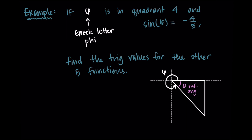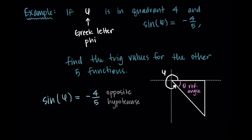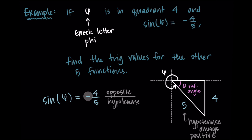I know that sine of phi is negative four over five. Sine is opposite over hypotenuse, so the four is the opposite and the five is the hypotenuse. The hypotenuse is always positive — it's like the radius of the circle — and one of the sides, x or y, can be negative depending on the quadrant. In quadrant four, y values are negative since they're below the x-axis, so I label that side as negative four.